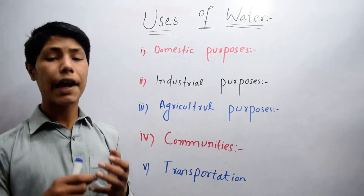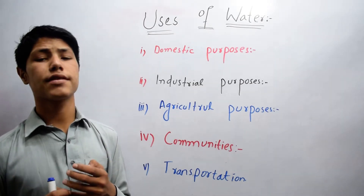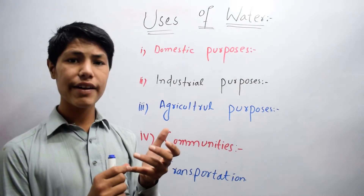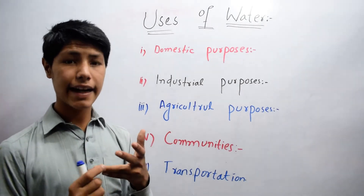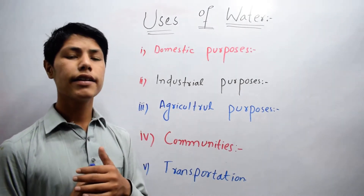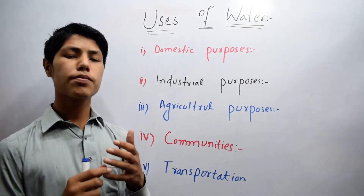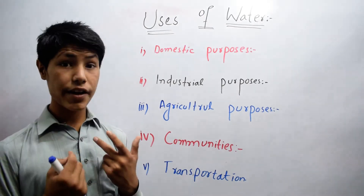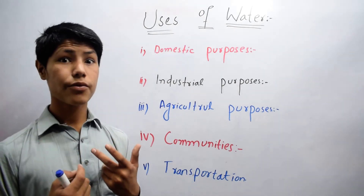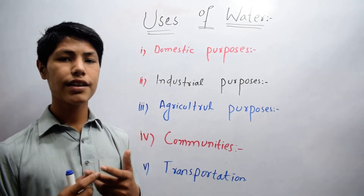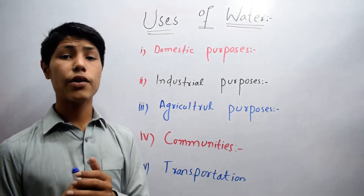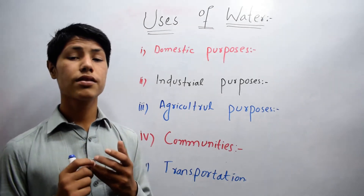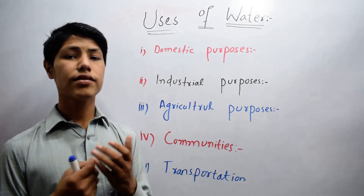We use water in two ways: the first one is the direct way and the second one is the indirect way. Direct way we can use for bathing, for washing the dishes, for drinking when we are thirsty. Indirect way we use water for crops, for fertilizer, etc.